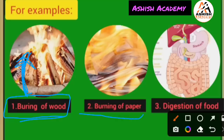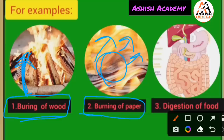Second example: burning of paper — kisi paper ko jala dijiye, then try to get it back — you cannot. Energy is released and new substances are formed after the chemical reaction. So we can say this is a chemical change.